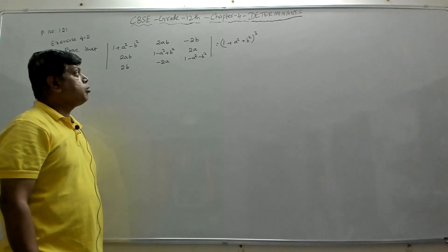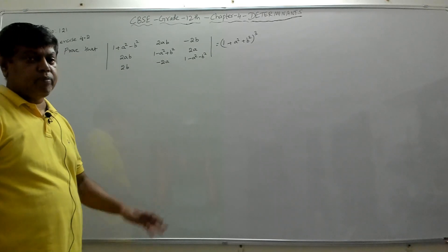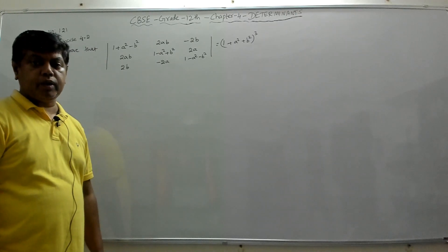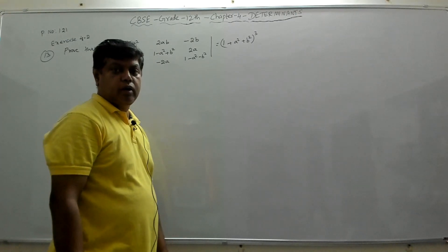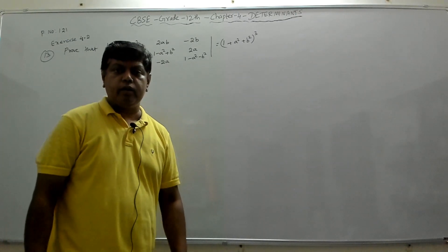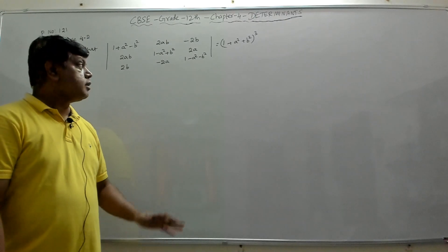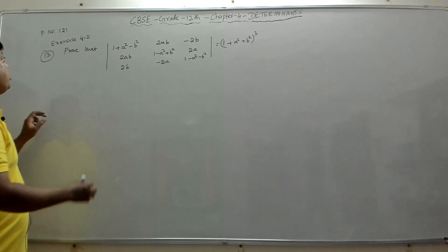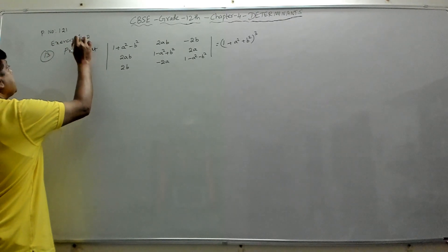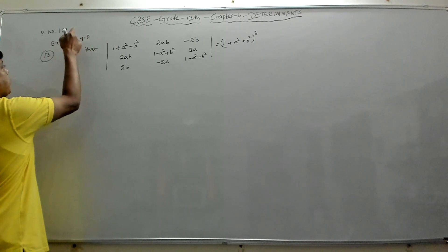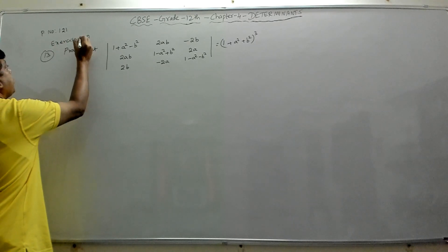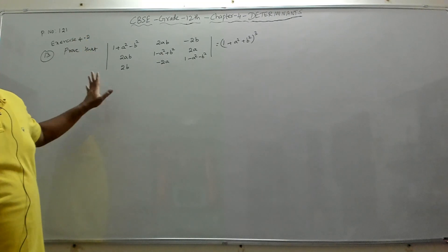Hi everyone, welcome to MyMax Academy. In this video, we will continue with the chapter Determinants, which is chapter 4 from your 12th standard CBSE Mathematics. We will continue from exercise 4.2 on page number 121 of your textbook, problem number 13.